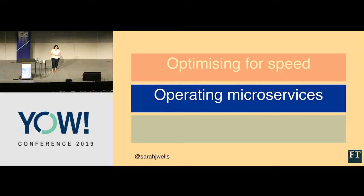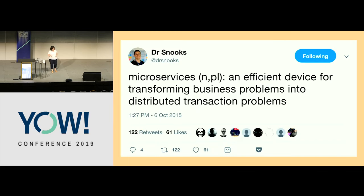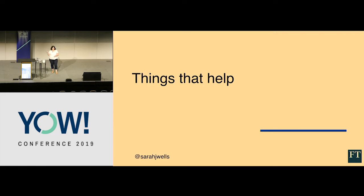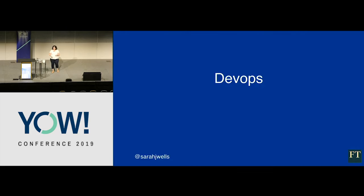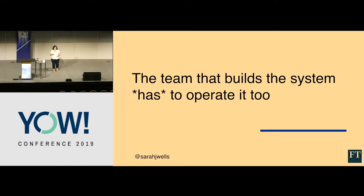But operating microservices isn't easy — it's much harder than the monolith. Microservices are an efficient device for transforming business problems into distributed transaction problems: things that used to be a call within the process are now over the network, and the network is unreliable. We have to deal with inconsistency, partial failures, and we can't live within a single transaction. With the list problem I described, it took the developers working on that system more than 24 hours to work out what was going on — there is no chance someone who wasn't working on that system would have figured it out. The things that go wrong are complicated, complex, and unpredictable.